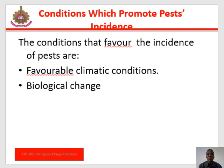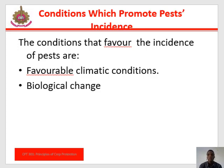Conditions which promote pest incidence: The conditions that favor pest incidence include favorable climatic conditions and biological changes. The most common way in which organisms attain pest status is simply by an increase in numbers. The seasonal increase in pest numbers is usually controlled by climatic conditions and biological pressure. These climatic conditions include temperature, humidity, rainfall, and sunlight.